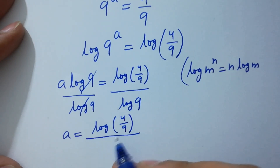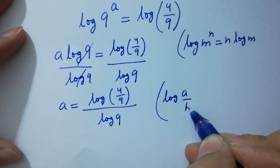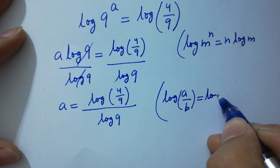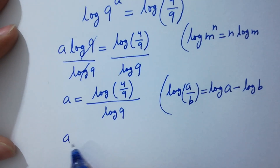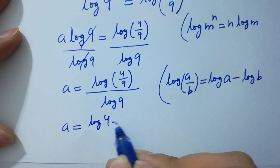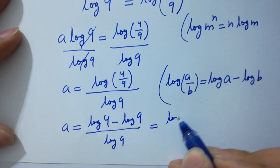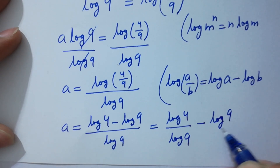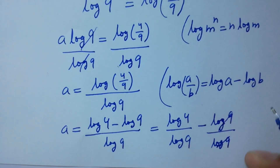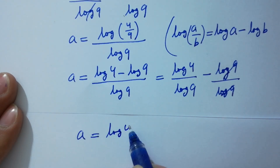As log(a over b) equals log a minus log b, we get a equals log 4 minus log 9 over log 9, which equals log 4 over log 9 minus log 9 over log 9. Log 9 and log 9 cancel, so a equals log 4 over log 9 minus 1.